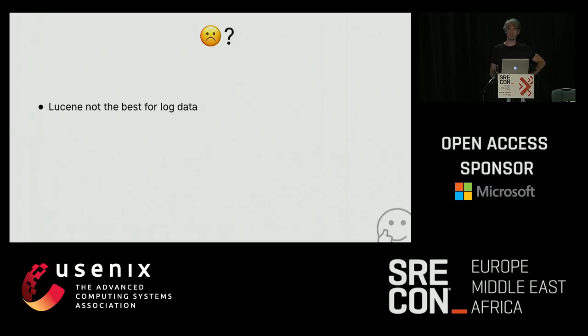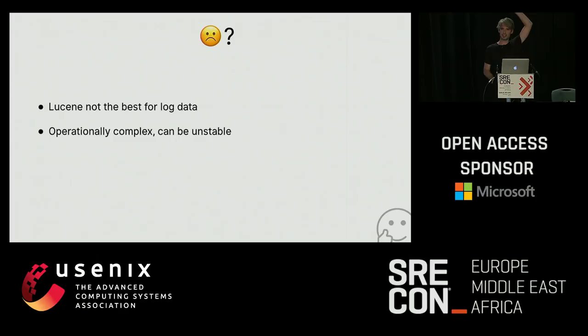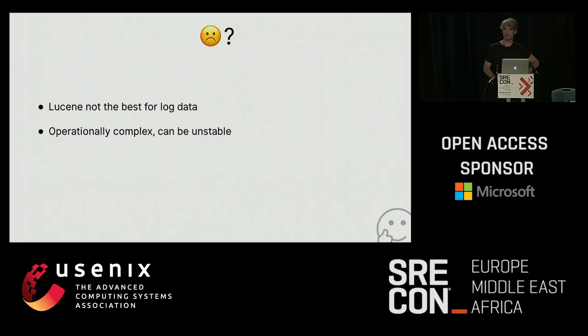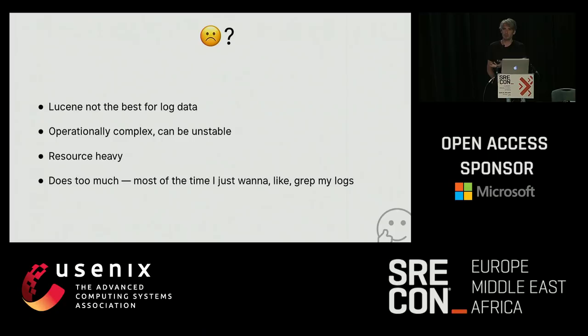Why don't I like Elasticsearch? In my opinion, Lucene wasn't built for holding this kind of data. It can be bent to fit, but it's not a natural fit. How many of you run Elasticsearch clusters and are having a good time? I know people that can run these things effectively, but they are few and far between. Most people, when they boot up a cluster, have a bad time. It's very resource-heavy, it's on the JVM, and it does too much. Most of the time I just want to grep my logs and I don't need all that other stuff.